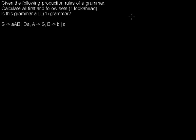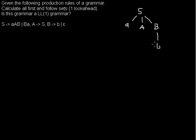Let me give you an example derivation first, or an example tree of a word. We start with the starting symbol S, then it derives — first we take the first rule, and this B maybe goes to b, and the A derives to S. Now let's take the second rule, so S goes to B and A, and the B maybe goes to small b.